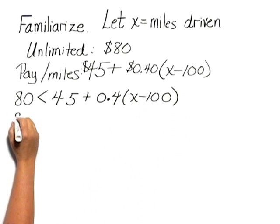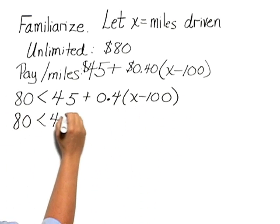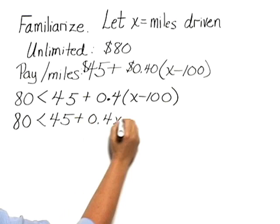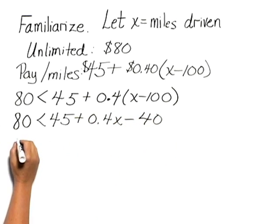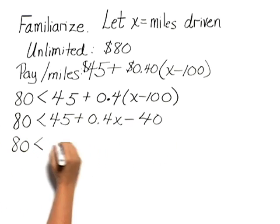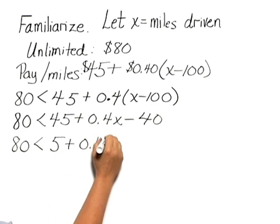Let's solve. We have 80 is less than 45 plus 0.4X minus 40. And we can combine terms.